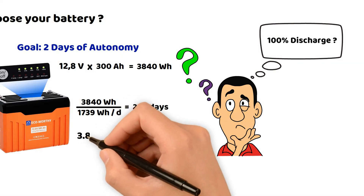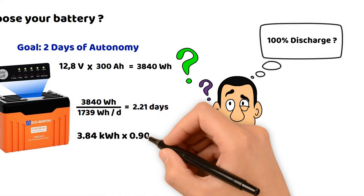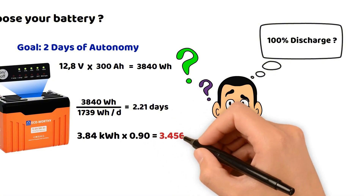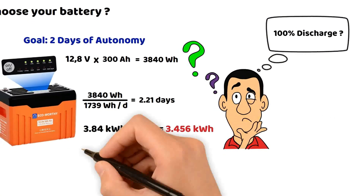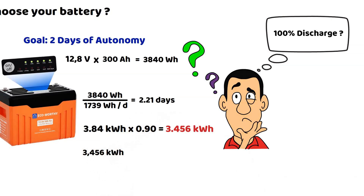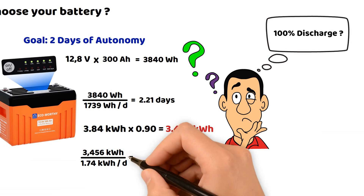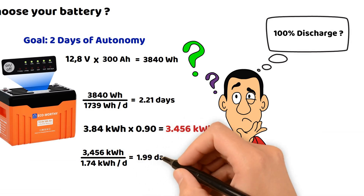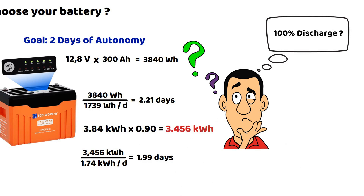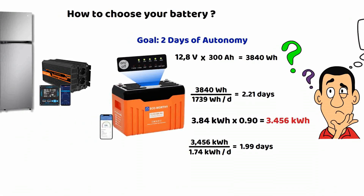Therefore, the usable capacity will rather be 3,456 watt hours. In the end, we will be slightly below two days — one day and 23 hours to be more precise. But this remains an example based on specific starting data. The consumption of a fridge is very variable, and it is not the easiest thing to calculate precisely.